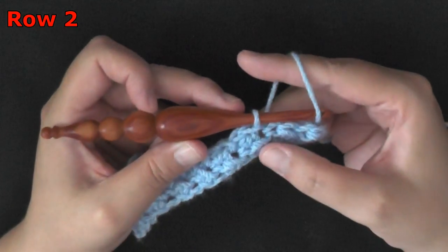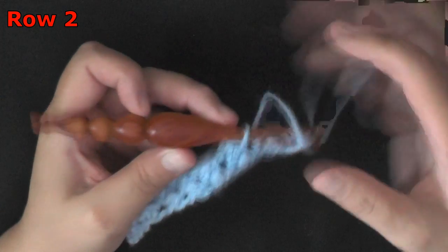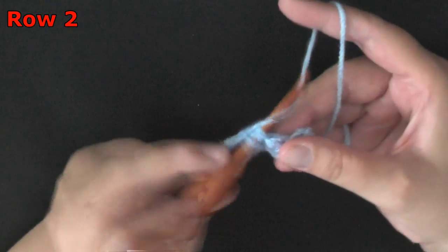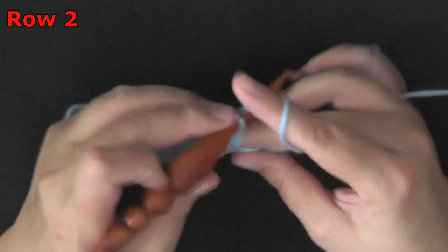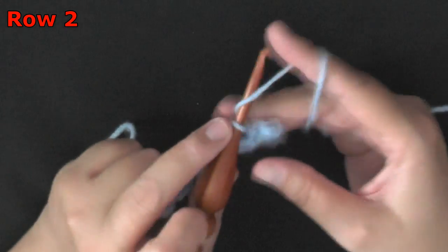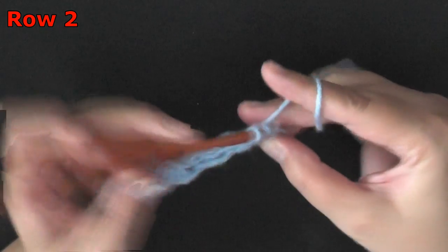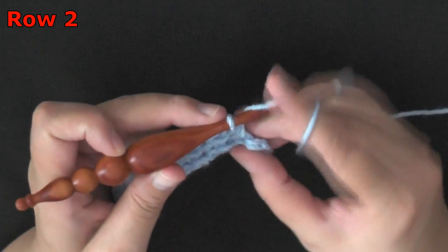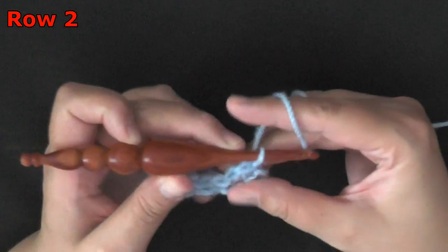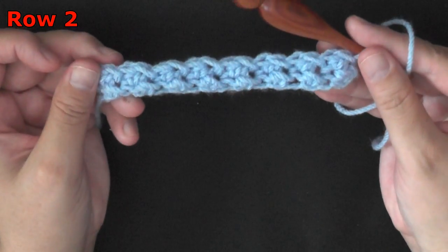I know this part up front was confusing people in the last video that I did. They thought maybe I was only going through one of the loops. But no, I am going through both loops of the stitch. So we started our row with a half double crochet. So here we are again ending with a slip stitch. And that's row two.